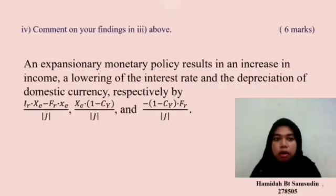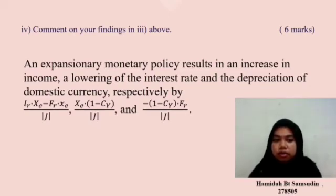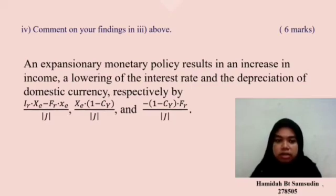Question 4 asks us to comment on our findings from Question 3. An expansionary monetary policy results in an increase in income, a lowering of the interest rate, and a depreciation of domestic currency, by amounts I subscript R times X subscript E minus F subscript R times X subscript E divided by Jacobian, X subscript E times 1 minus C subscript Y divided by Jacobian, and negative 1 minus C subscript Y times F subscript R divided by Jacobian respectively. Here I represents investment, X represents net export, E represents exchange rate, R represents interest rate, F represents net inflow of capital, and C subscript Y represents consumption.